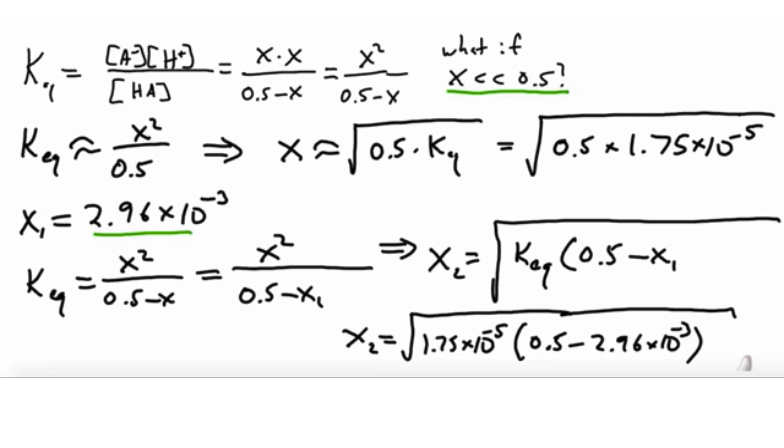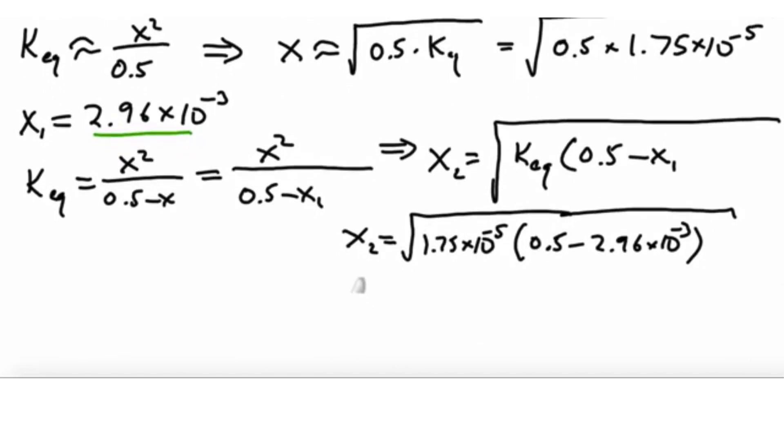What does that come out to? x2 equals 2.95 times 10^-3. Notice x1 was 2.96 times 10^-3, so we're converging rapidly. Since our original data had only one sig fig, we're justified in stopping. We're now accurate at the third figure, which is plenty—actually overkill.